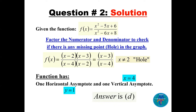With any rational function, we try to factor numerator and denominator to check for missing points or holes. The numerator factors as (x-2)(x-3) and the denominator factors as (x-4)(x-2). We cancel (x-2), noting that x cannot equal 2. The simplified function becomes (x-3)/(x-4), and there is a hole in the graph at x = 2.